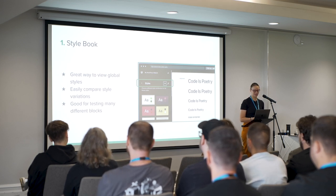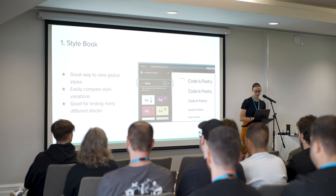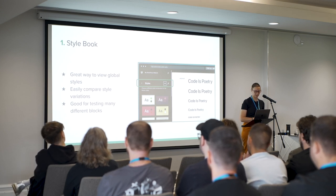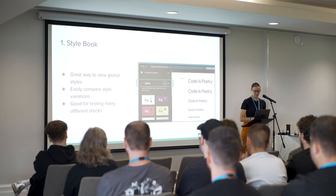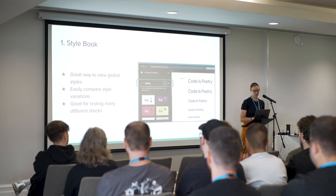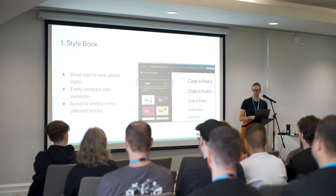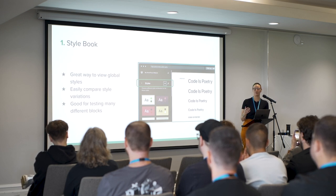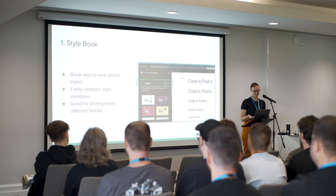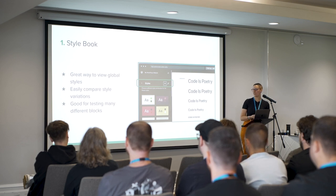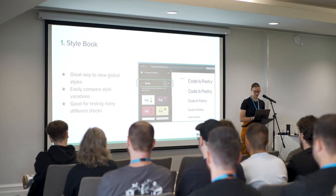The not-so-obvious point I wanted to make about the Style Book is that it's great for automated testing. For example, if you have a theme and some visual regression tests, you could spin up a WordPress instance, send it to the Style Book, and run tests. It's not going to capture everything, but it will capture quite a bit — and you can run automated tests on the blocks that the Style Book renders.